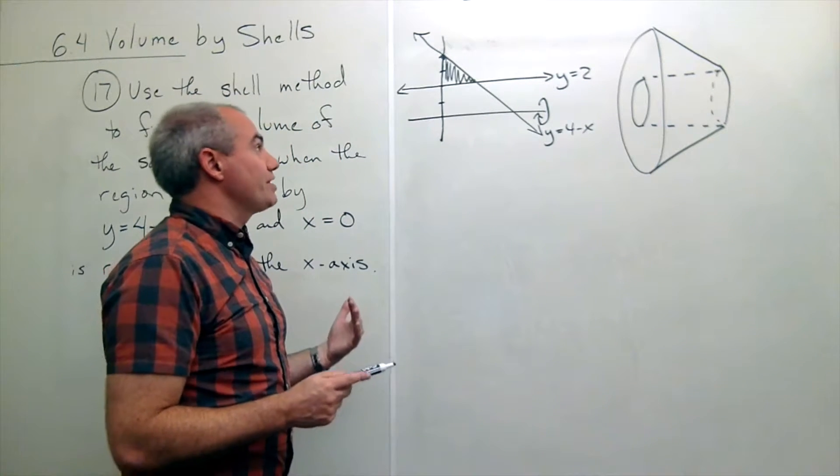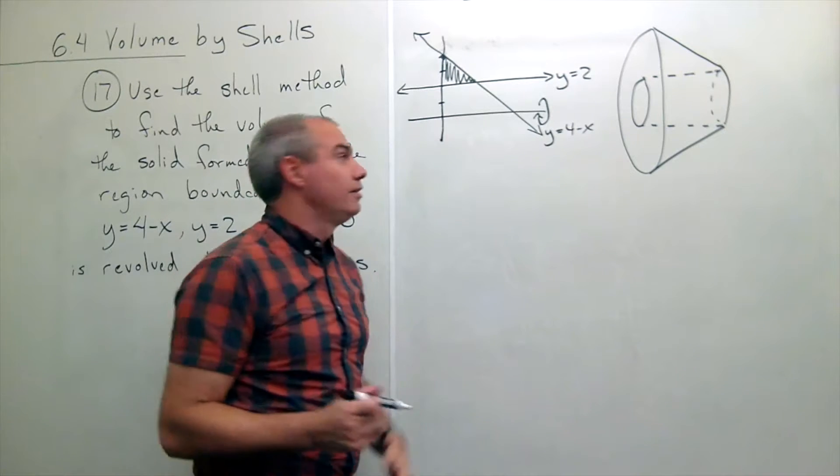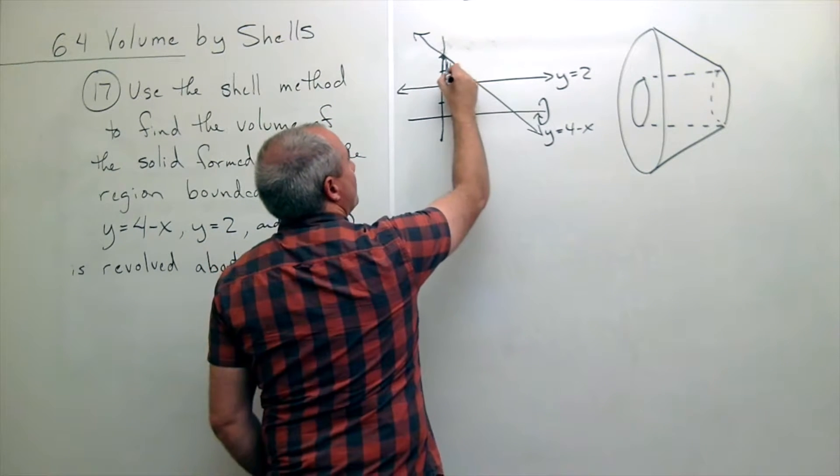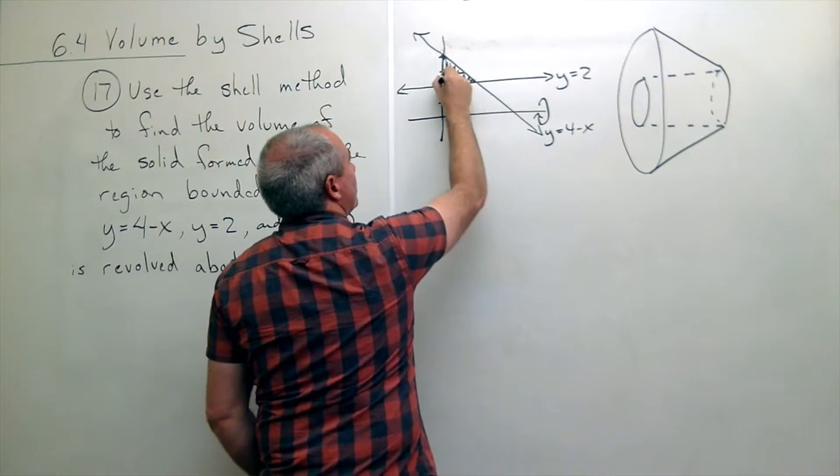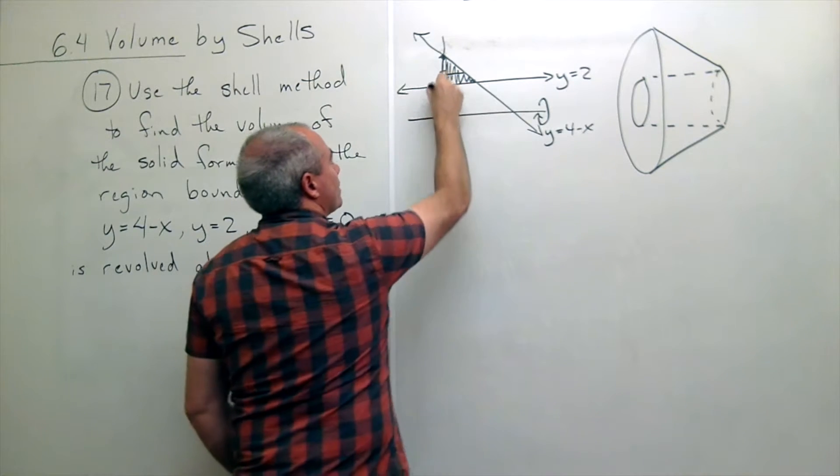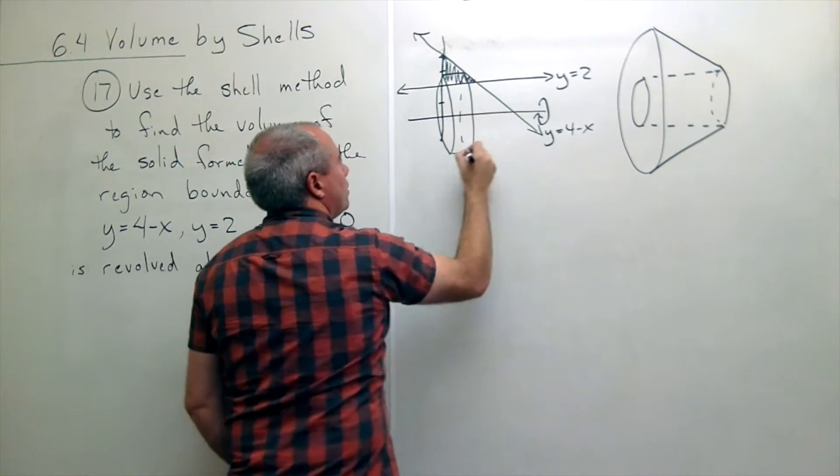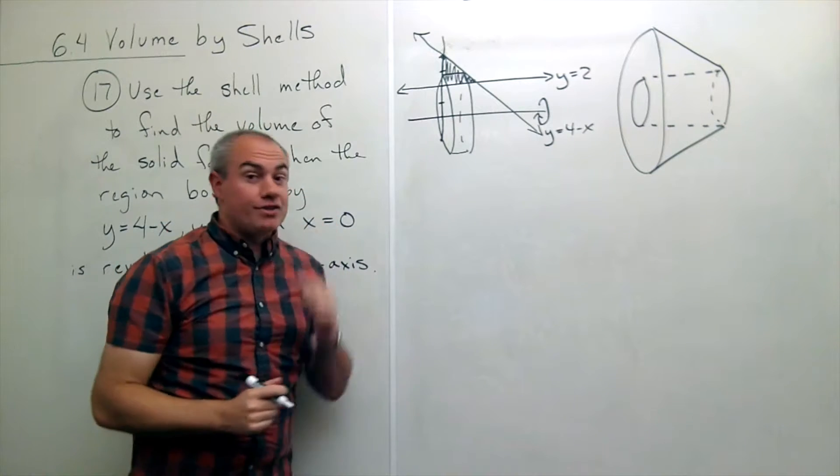Now, if I want to chop this thing and make a shell, then what I would do is I would make a slice horizontally, spin that slice and you see that I get a shell.